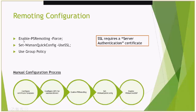Aside from using Enable-PSRemoting -Force and Set-WSManQuickConfig, you can also use Group Policy through Active Directory to standardize your WinRM configuration across your environment. These are just the steps you would manually run through to get it up and running in a lab or on one or two systems.